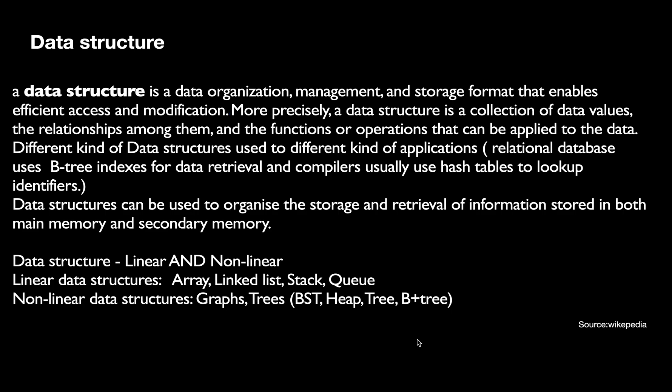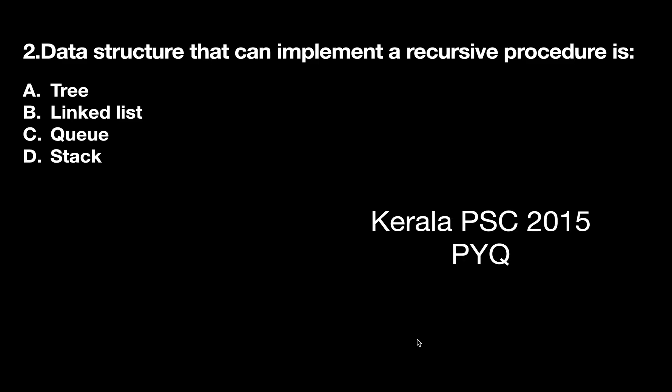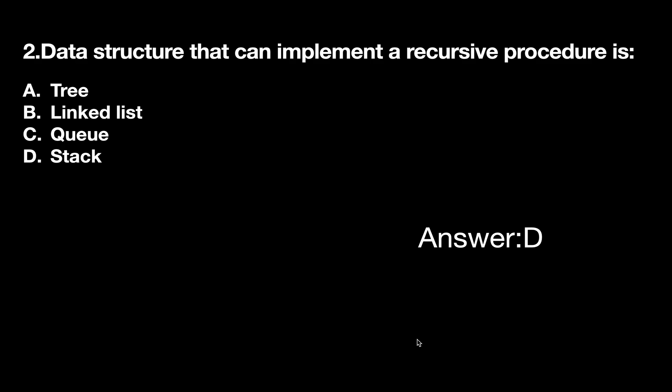Question number two: the data structure that can implement a recursive procedure is — option A: tree, option B: linked list, option C: queue, option D: stack. This is a previous question from 2015. The correct answer is option D, stack.